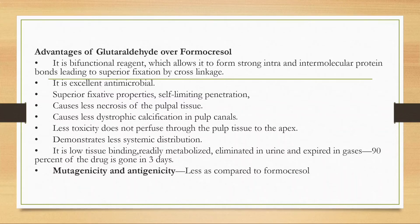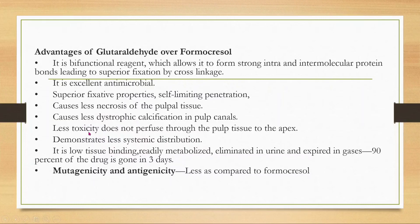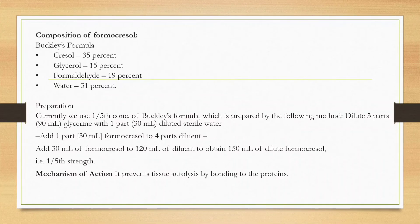Advantages of glutaraldehyde over formocresol: glutaraldehyde is a bifunctional reagent which allows formation of strong intra- and intermolecular protein bonding, leading to superior fixation by cross-linkage. It is an excellent antimicrobial agent with superior fixative properties. It has self-limiting penetration, causes less necrosis, less dystrophic calcification of pulp canal. It is less toxic, demonstrates less systemic distribution, has low tissue binding, is readily metabolized and eliminated in urine — 90% in three days — and has less mutagenicity and antigenicity compared to formocresol.